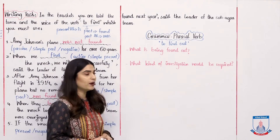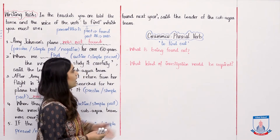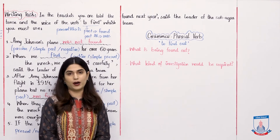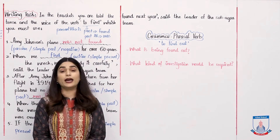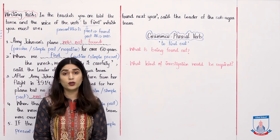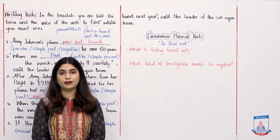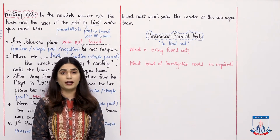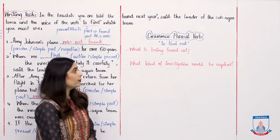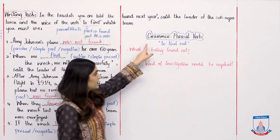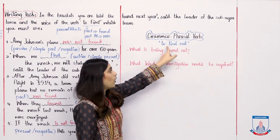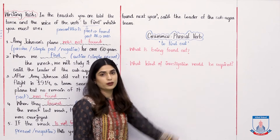Well done, students. Today we studied active and passive voice together, and we also solved the exercise. Now we need to do one more small grammar part — we need to discuss the verb 'to find.' The phrasal verb we will use in this grammar tenses section is 'to find out.'